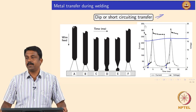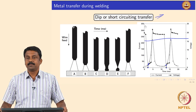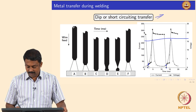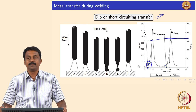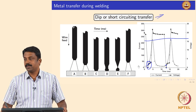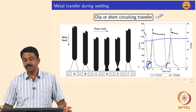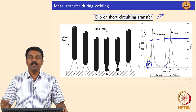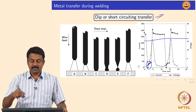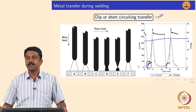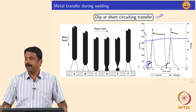The trickiest part of short-circuiting transfer is controlling current and voltage. The voltage is controlled by itself because of the short circuiting event, and the moment short circuiting happens, the current should be minimized to avoid explosion.